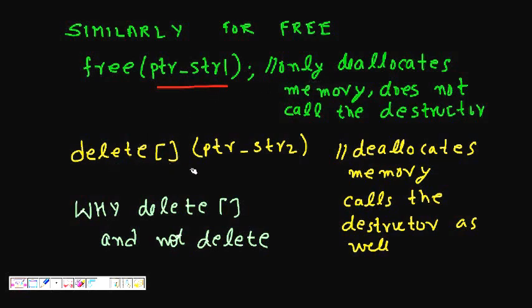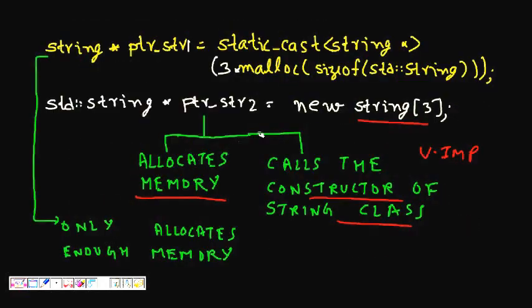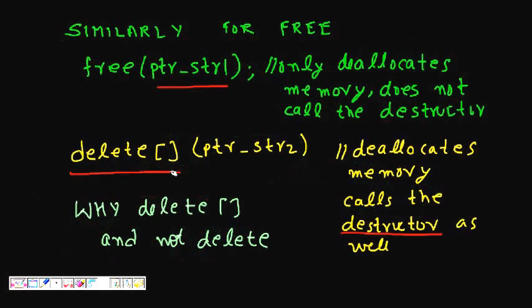And here we do delete[] ptr_str2, so this deallocates memory and it also calls the destructor, so this is fine. The things to remember is that we should use new for C++ classes because it also calls the constructor of the class besides allocating memory. Similarly we should call delete because it calls the destructor as well as frees the memory.